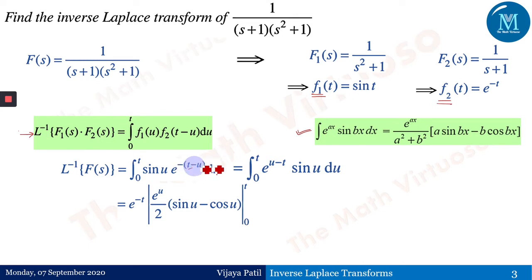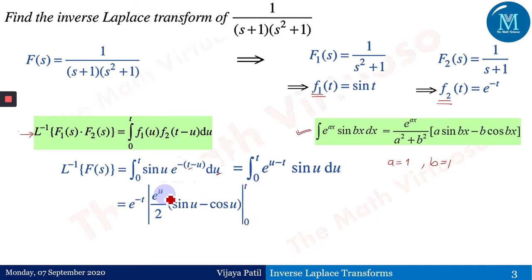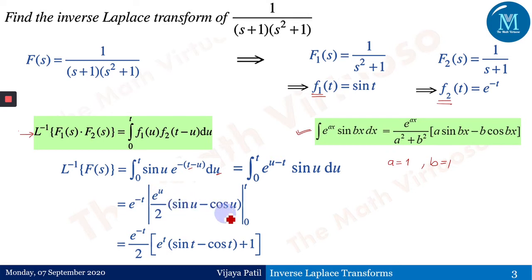Comparing our integral with the formula, t is constant so e^(−t) comes out. Here a = 1 and b = 1, so e^(ax) = e^u, a²+b² = 1²+1² = 2, giving [e^u/2 · (1·sin(u) − 1·cos(u))] evaluated from 0 to t. Every u is replaced by t for the upper limit and by 0 for the lower limit.